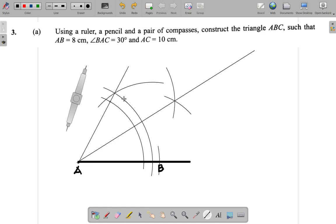Now, it says AC is 10. So I place my compass back on this point, open to 10. I use this as my 10 centimeters and swing an arc. Now, right here is where C is located.